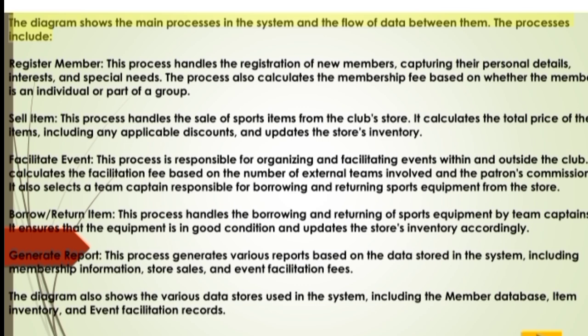The register member process handles the registration of new members, capturing their personal details, interests, and special needs. It also calculates the membership fee based on whether the member is an individual or part of a group. The sell item process handles the sale of sports items from the club store, calculates the total price including any applicable discounts, and updates the store's inventory.